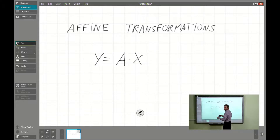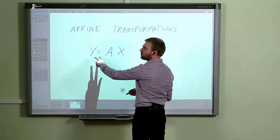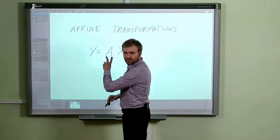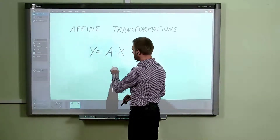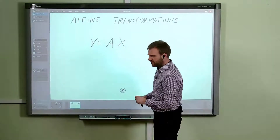We will have two elements — two vectors x and y — and the transformation given by the matrix A.